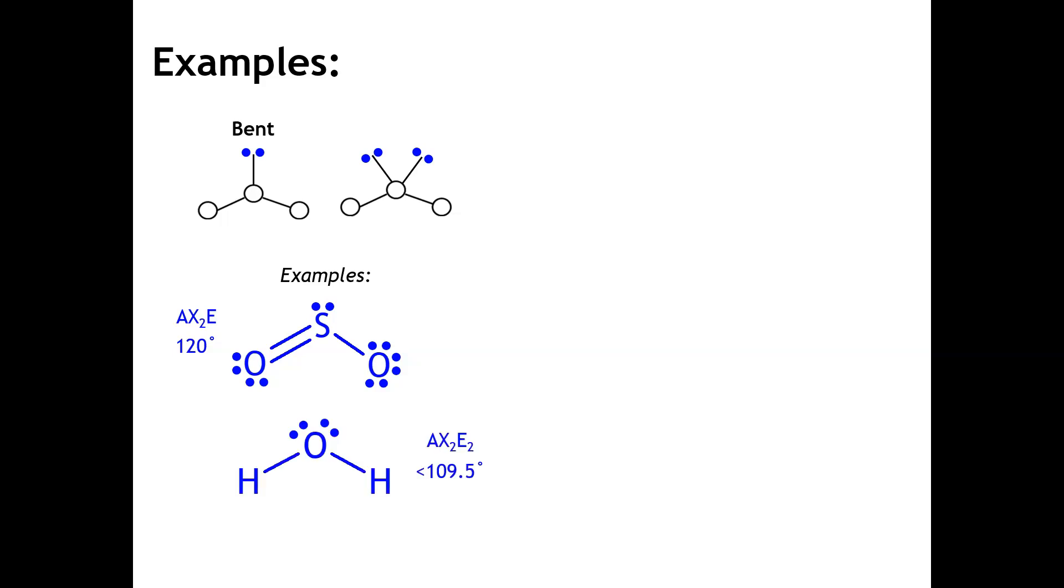If we take something like water, water has four electron domains or electron regions, and this is AX2E2. In this case, you wouldn't expect the bond angle to be 109.5 because of the fact that there is extra repulsion between those two unshared pairs. We usually say that the bond angle is less than 109.5. In fact, for water, if you were to look it up, it's probably closer to around 104.